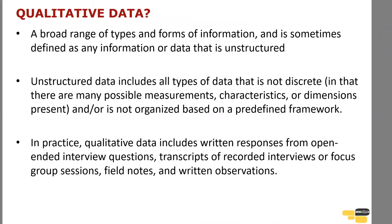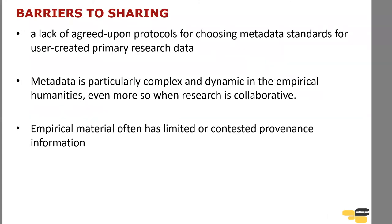Qualitative data includes a broad range of types and forms of information, sometimes defined as any information that is unstructured. Unstructured data is not discrete — it has many possible measurements, characteristics, or dimensions and is not organized based on a predefined framework. Most raw qualitative data, including text, images, and audio and video, is considered unstructured. In practice, qualitative data includes written responses from open-ended interview questions, transcripts of recorded interviews or focus group sessions, field notes, and written observations. One primary barrier to sharing data in the empirical humanities is a lack of agreed-upon protocols for choosing metadata standards for user-created primary research data.